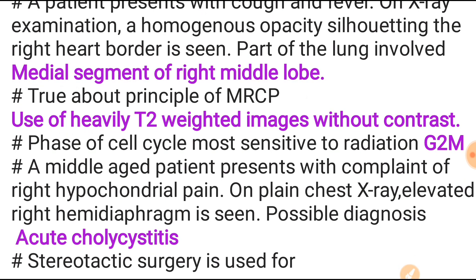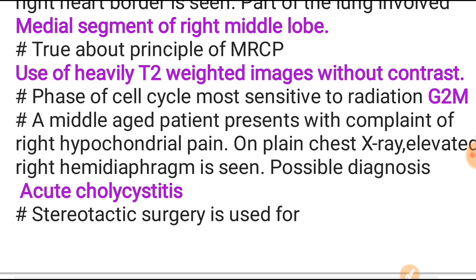The principle of MRCP is the use of heavily T2-weighted images without contrast. The phase of the cell cycle most sensitive to radiation is G2M — it is the most sensitive phase.